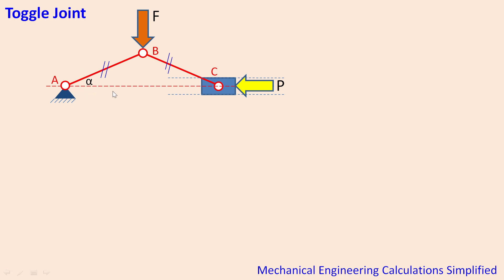I have given a parameter alpha to denote the angle between the link, the first link AB and the horizontal line. For simplicity of analysis for the first hand I have considered these two links to be symmetric, the length of AB and length of link BC is same.